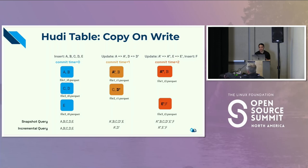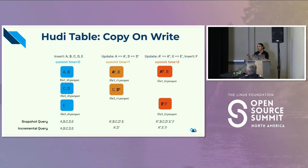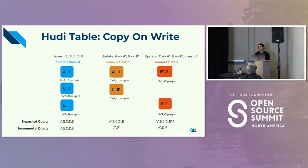With Hoodie, you have two types of queries you can run on a copy-on-write table: a snapshot query and an incremental query. A snapshot query is basically a current view of your whole table as it exists in that moment. An incremental query shows you just the updates that happen between, say, commit 2 and commit 3. Looking at the blue boxes, we have an insertion of A, B, C, D, E with a commit time of 0.